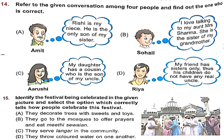Question 14: Find out who is correct among the four people. Amit says Rishi is his niece and the only son of his sister — wrong, because son of sister is called nephew, not niece. Suhail says his aunt Mrs. Sharma is the sister of his grandmother — wrong, grandmother's sister is also called grandmother. Arushi says her daughter has a cousin who is the son of her uncle — wrong, son of mother's uncle is an uncle, not a cousin. Rhea says her friend has sisters only, so his children do not have any real uncle — correct, they will have only aunts. So Option D is the right answer.